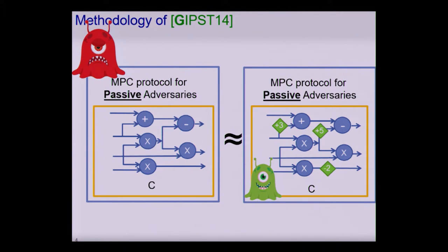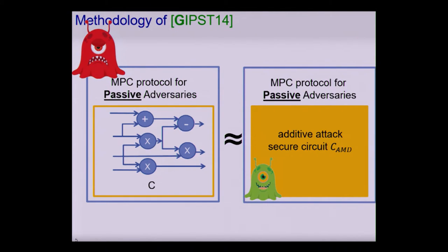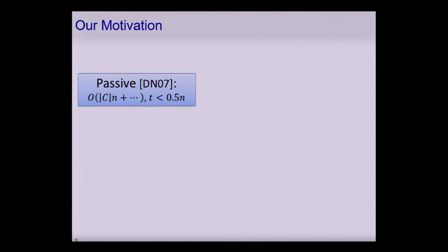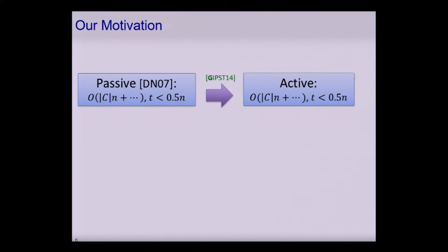So this bad evil monster is replaced by an arguably cuter one. By replacing the circuit with a circuit that actually resists additive attacks, we were able to construct actively secure MPC. One example application is a very nice protocol in the honest majority setting by Damgaard-Nielsen, whose leading term in communication complexity depends linearly on both the circuit size and the number of parties. Compiling this protocol using the previous compiler, we achieved an actively secure protocol with the exact same communication complexity.